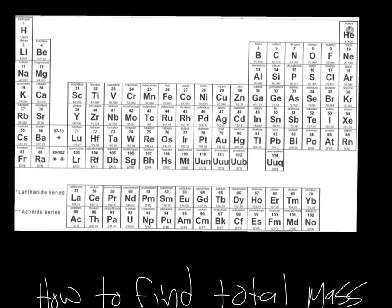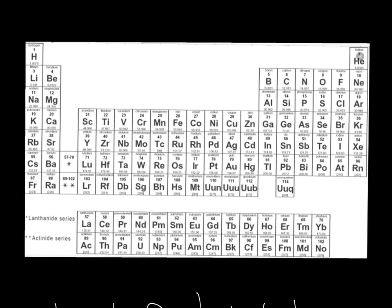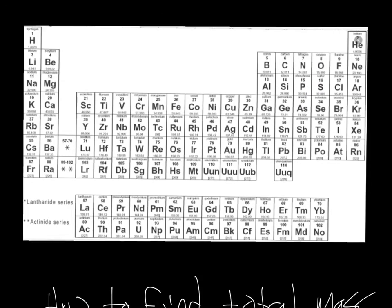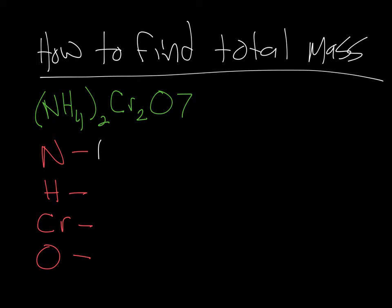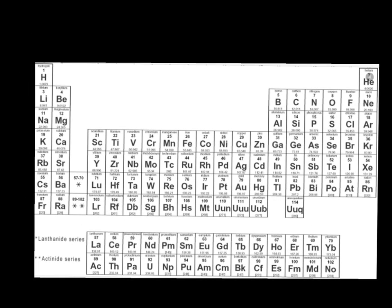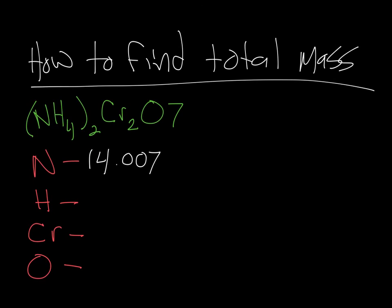So I happen to have a periodic table right here. So nitrogen's mass, as you see here, is 14.007. So we go back here and we write our mass of 14.007. And then we have hydrogen, which is right here, 1.0079. I'm going to round that to 1.008.